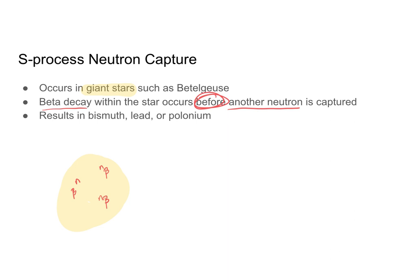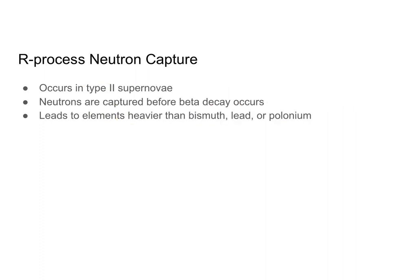What happens is that the star eventually develops bismuth, lead, and polonium — some fun elements to see. And S process neutron capture terminates right there.